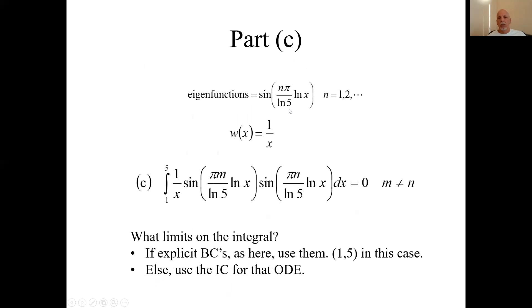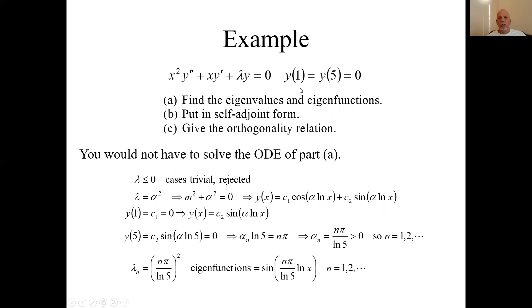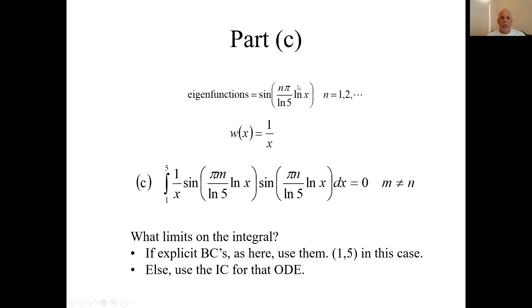Part c, we need eigenfunctions and the weighting function. We're also going to need the limits. But the orthogonality relationship was, you take two of the functions. So we take the eigenfunctions, two different integers, and the weighting function. That's your integrand. And because in this case, we were given explicit boundary limits, x equals 1 and x equals 5. When they're given to you explicitly like that, that should be the limits of this integral. So here's our orthogonality relationship.